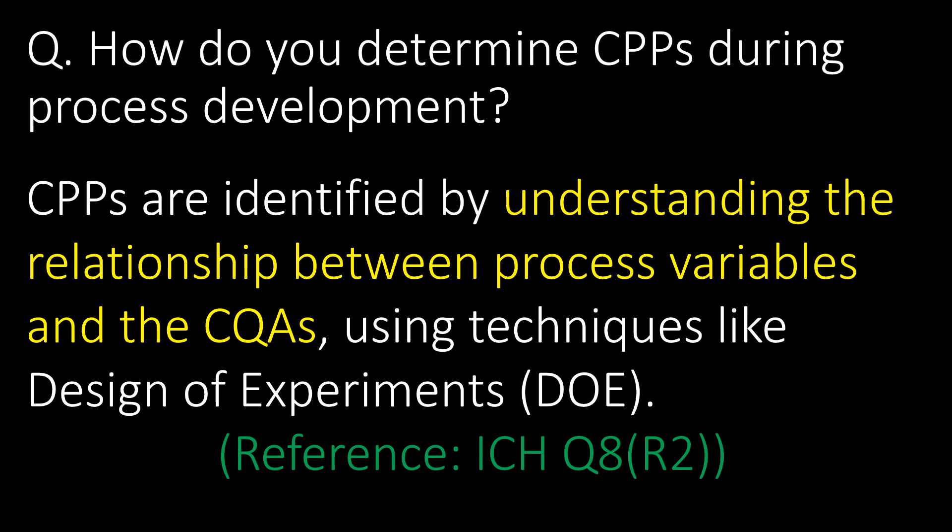How do you determine CPPs during process development? CPPs are identified by understanding the relationship between process variables and CQAs using techniques like design of experiments (DOE). Reference guideline: ICH Q8R2.